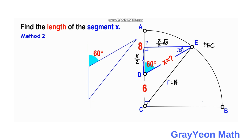For our second method, we isolate triangle ACD. Since the exterior angle at D is 60 degrees, the interior angle at D is 180 − 60 = 120 degrees. The sides are DC = 6, DE = X, and CE = 14, which is the radius of the quarter circle. We use the Law of Cosines because we have two sides, the included interior angle of 120 degrees, and the opposite side of 14 units.